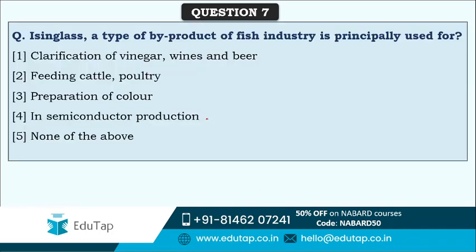Next question: Isinglass is a type of by-product of the fish industry and is principally used for what? One thing we learn from the question itself is that Isinglass is a by-product of the fish industry - that itself can be asked in exam form. Options are: clarification of vinegar, wines, and beer; feeding cattle or poultry; preparation of color in semiconductor production; or none of the above.